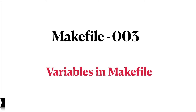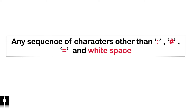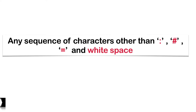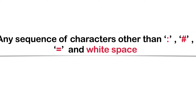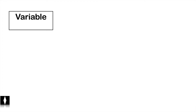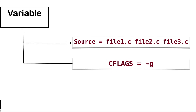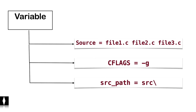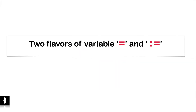In this video we will talk about use of variables in Makefile. A variable in Makefile is any sequence of characters other than colon, hash, equals to, or white space. A variable in Makefile is used to represent a string of text. A variable can be used to list file names, options to pass to compilers, directories to look in for source files, or any other purpose.